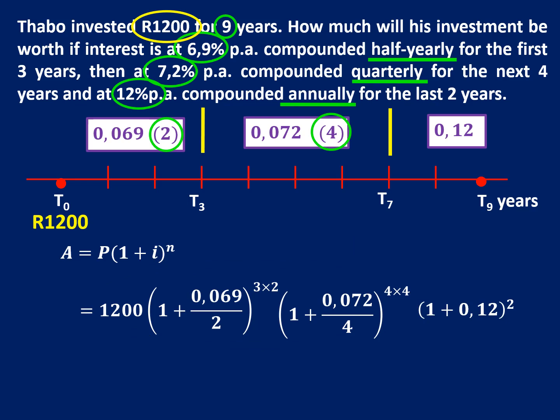So just multiply by the next interest bracket. And in this way we only type into our calculator once. We push equals once so we round off once. So we don't round off too early. And you should end up with R2,454.51.